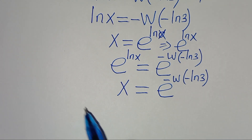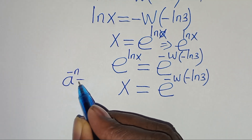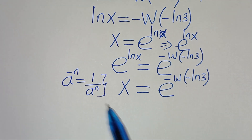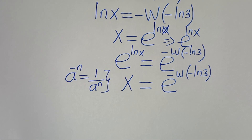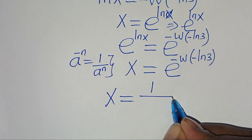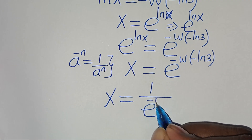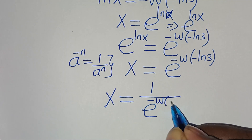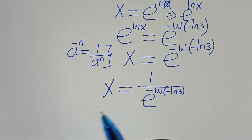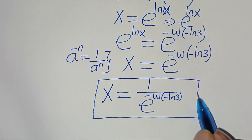Now, applying the property that a to the power of minus n equals 1 over a to the power of n, this implies that x equals 1 over e to the power of W of minus ln(3). This is the value of x and the solution to this algebra problem.